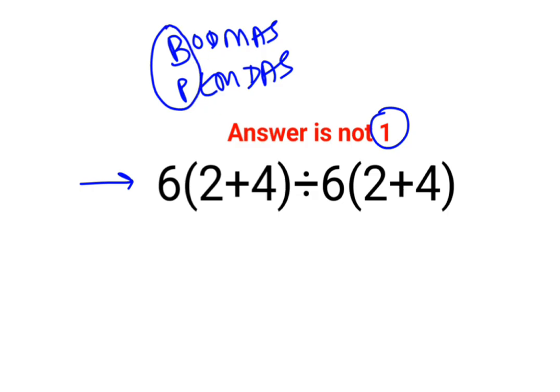So here, if you see, the first thing we should do is the bracket. Here we have 6 and the bracket is 2 plus 4 which is 6. And since there is no sign between 6 and the bracket, that means it is multiplication.